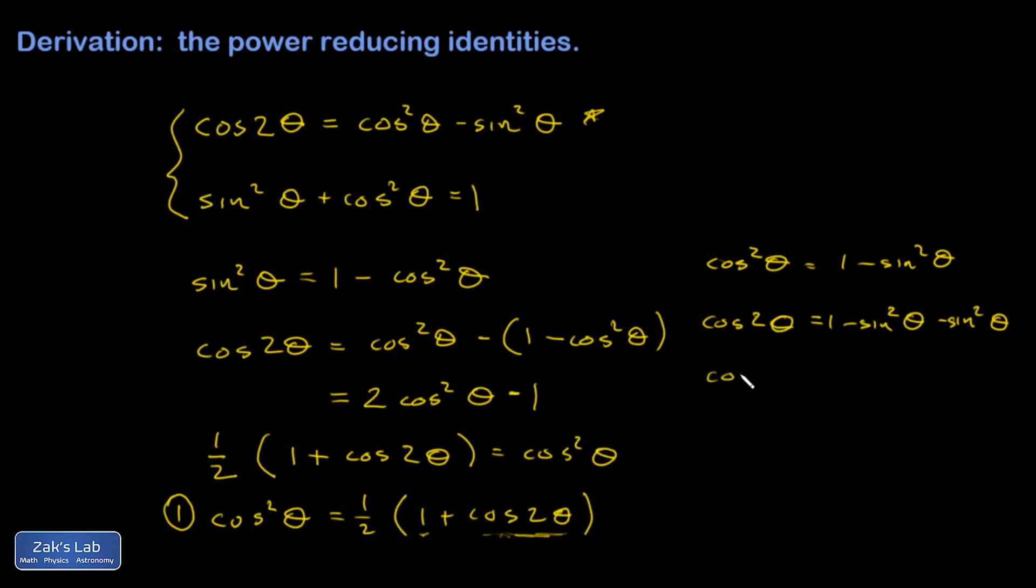That means cosine 2θ is one minus 2 sine squared θ.